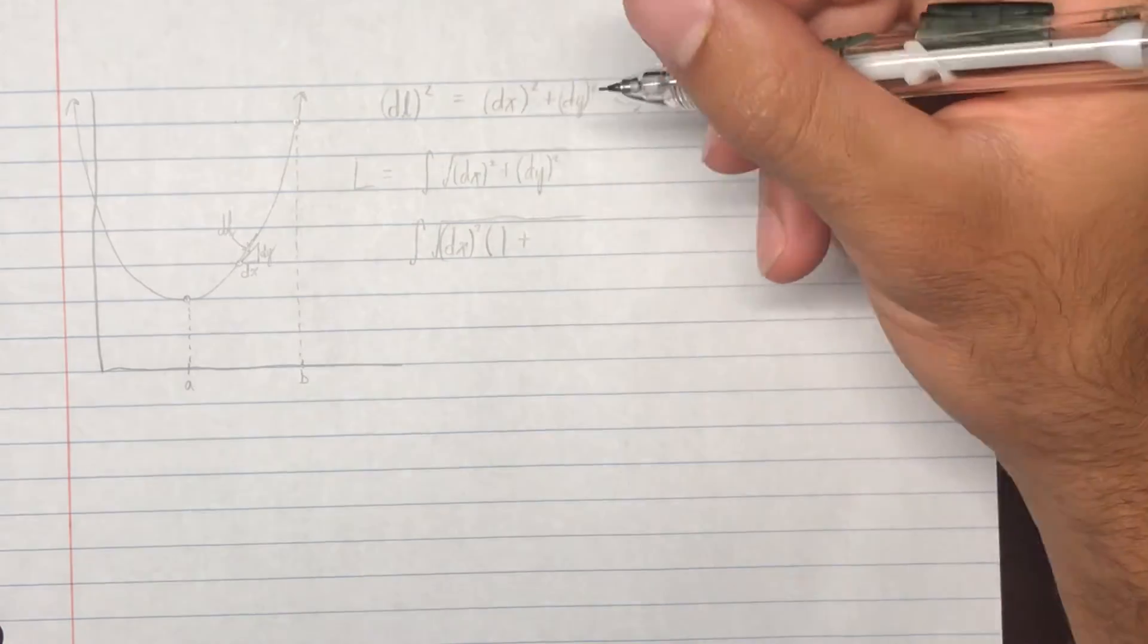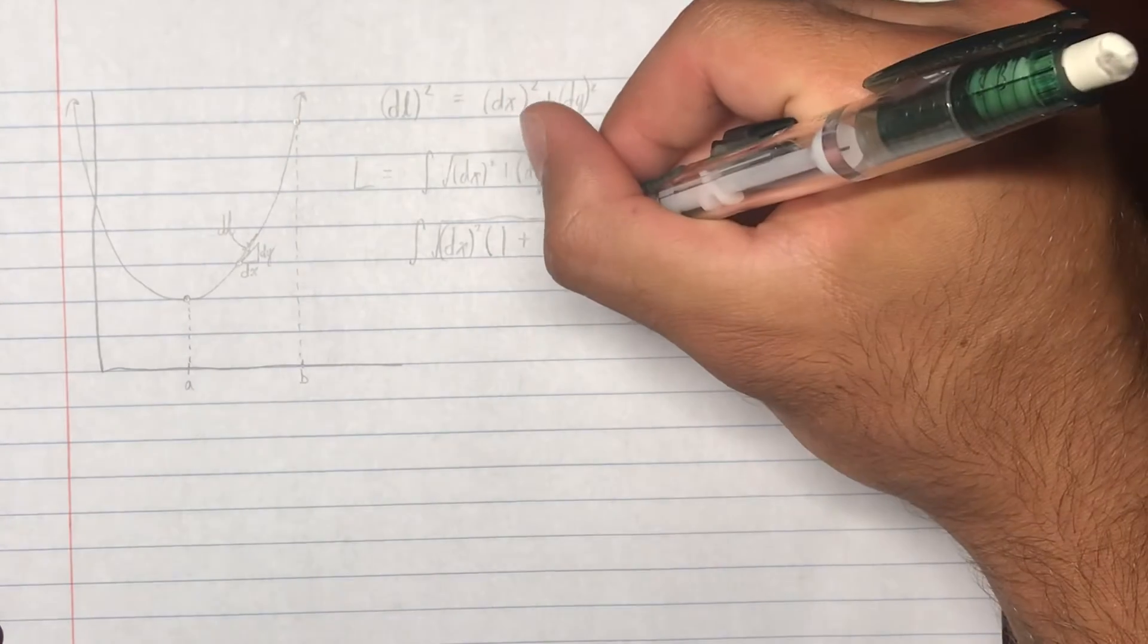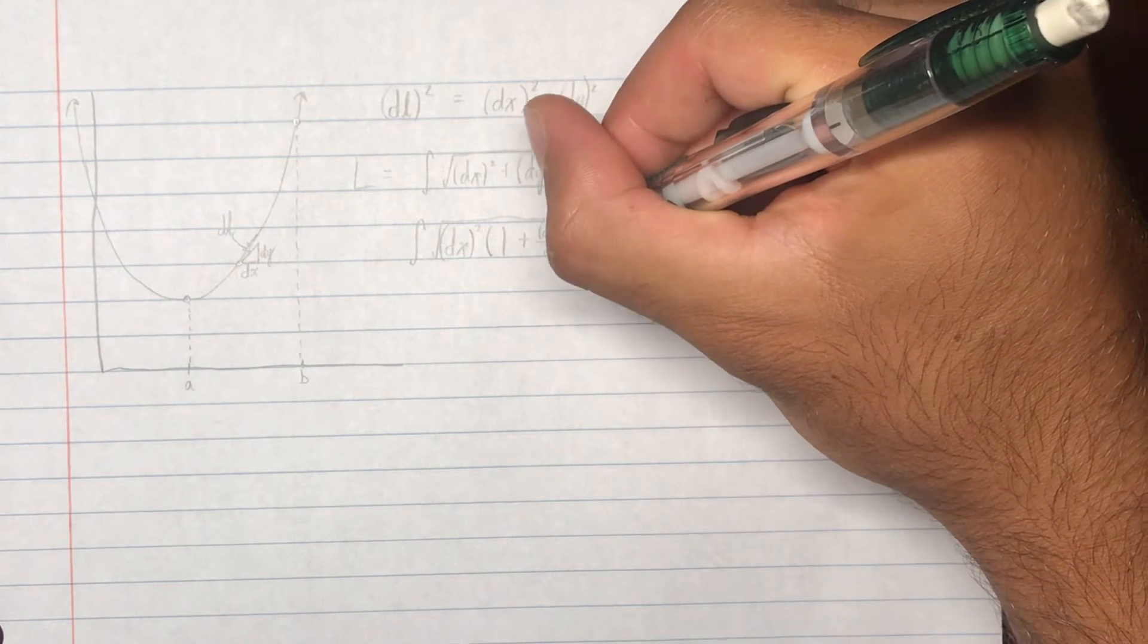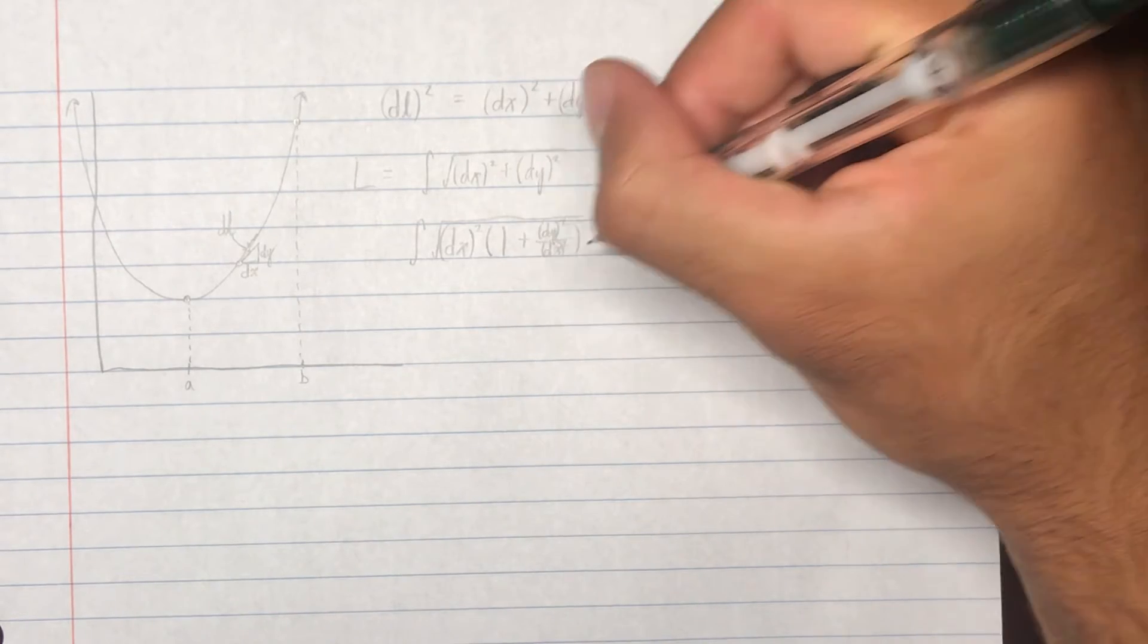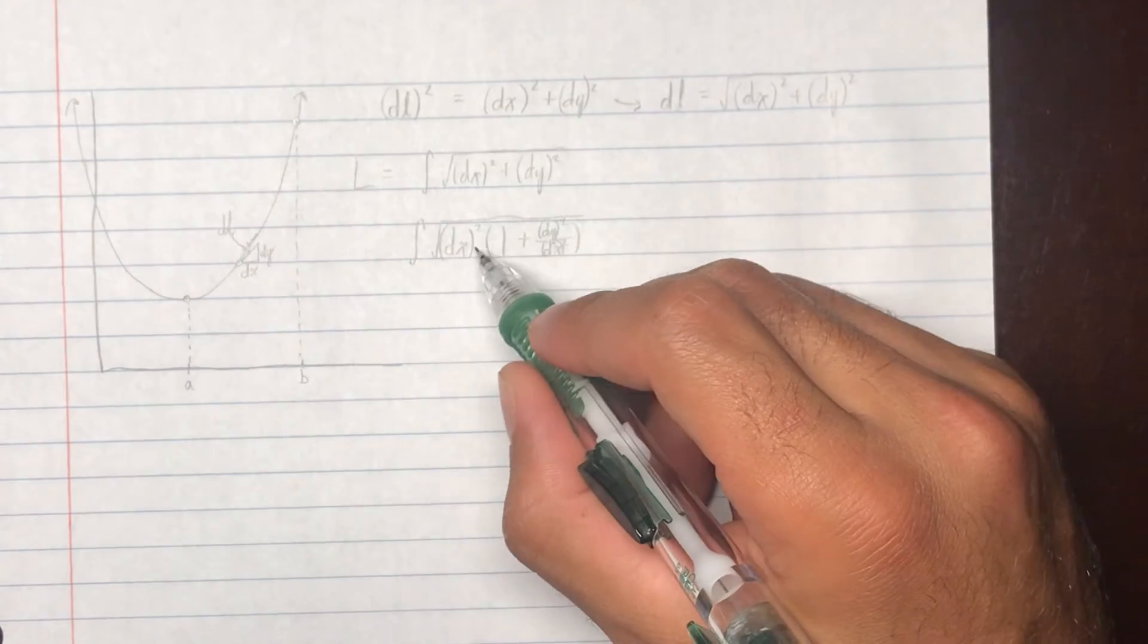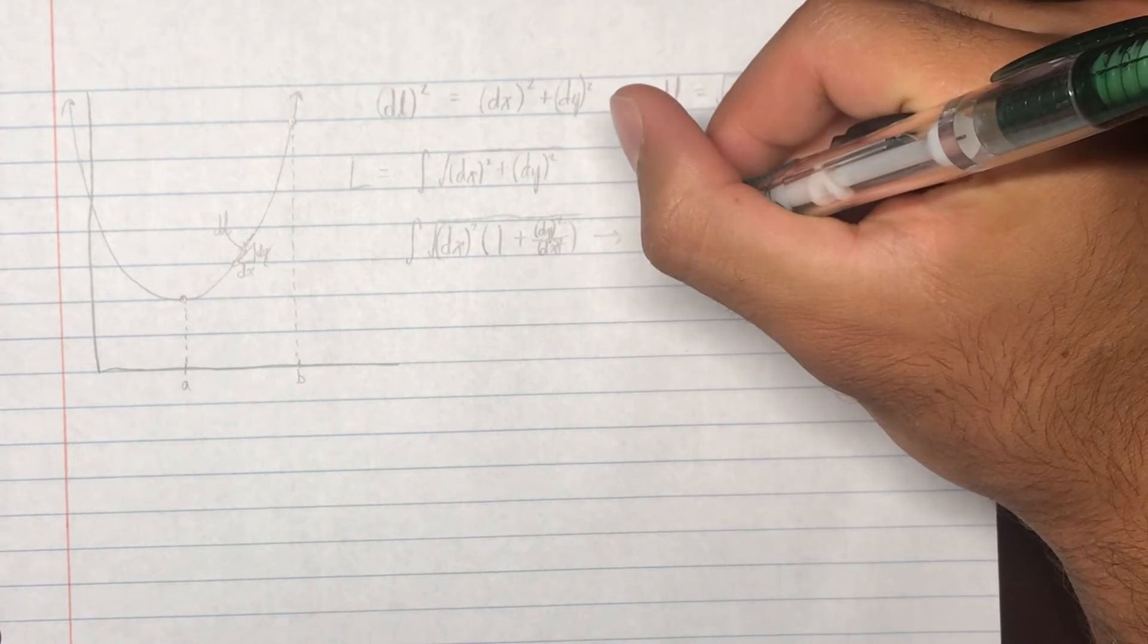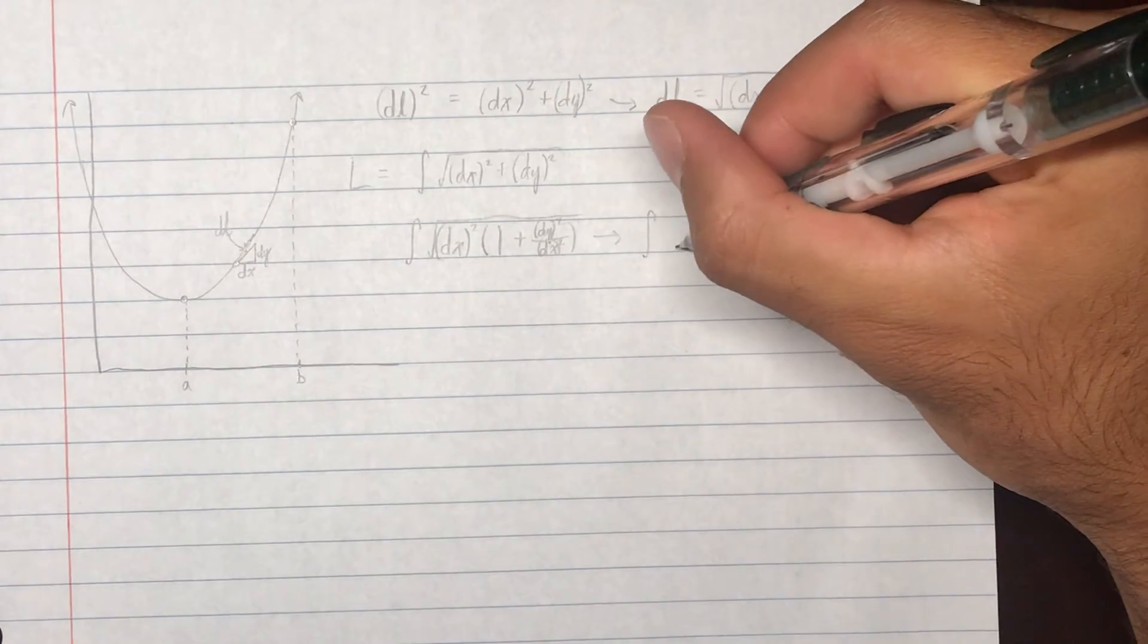So, this becomes dy squared over dx squared, right? So, this is what it becomes. But then, remember, the square root of the square of dx is simply dx. So, we move the dx to the outside, and that is where we get your respect to x term, or whatever you want to call it.